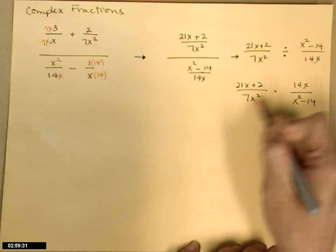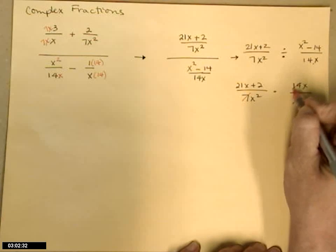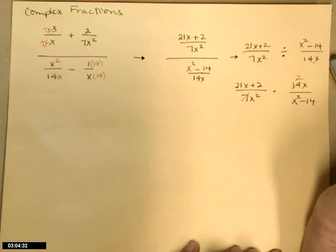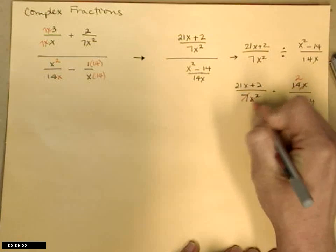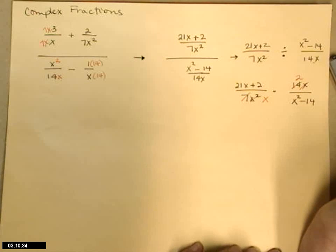So I'm going to go this way between the 7 and the 14. They are factors. It leaves behind a 2 there. This x and that x squared, those are factors. It leaves behind a plain old x.